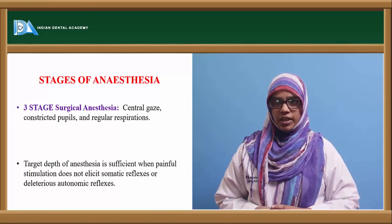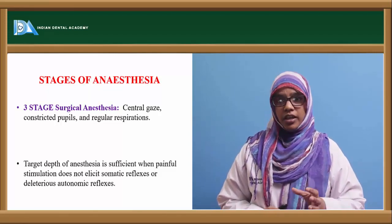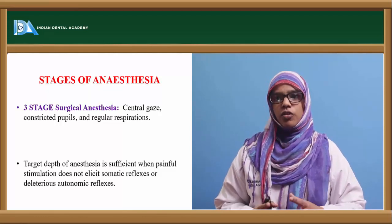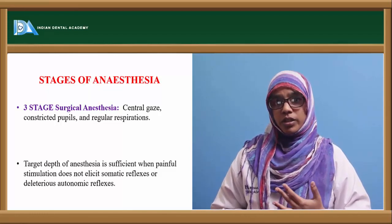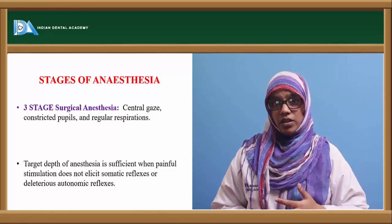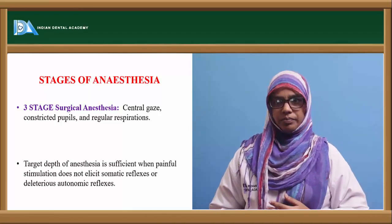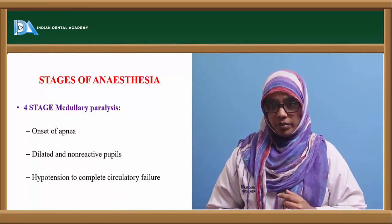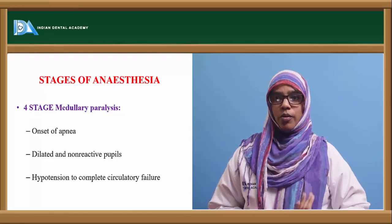The third stage is surgical anesthesia, characterized by central gaze, constricted pupils, and regular respiration. The target depth of anesthesia is sufficient when painful stimuli do not elicit any somatic or deleterious autonomic reflex. This stage has four planes: the first plane where the pupil does not react to light; the second surgical phase where corneal and laryngeal reflexes are lost; the third where pupils begin to dilate; and the fourth where the pupil becomes fixed. The fourth stage is medullary paralysis, characterized by apnea, dilated and unresponsive pupils, and if not controlled, hypertension leading to circulatory failure.